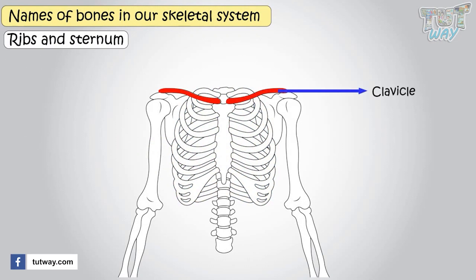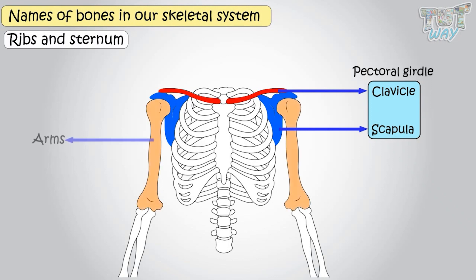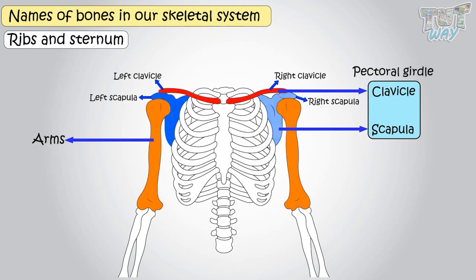This bone is called clavicle and this is scapula. These two bones together are known as the pectoral girdle. They connect the upper limb, that is our arm, to the skeleton. The pectoral girdle consists of the left and right clavicles and left and right scapulae.